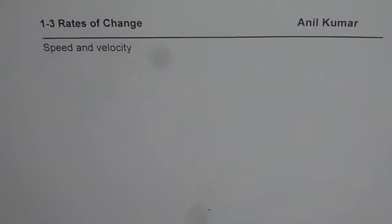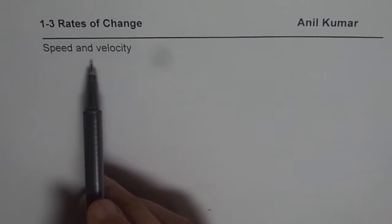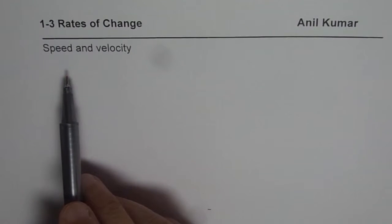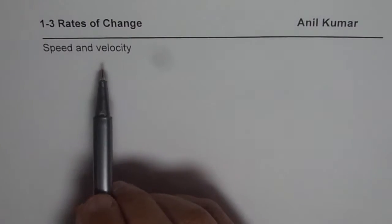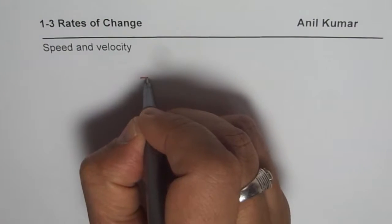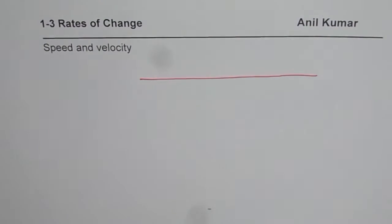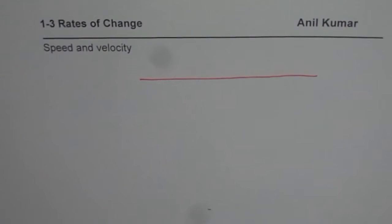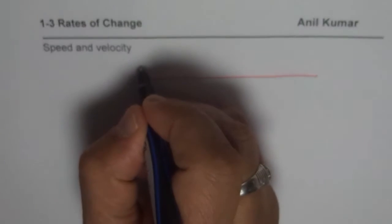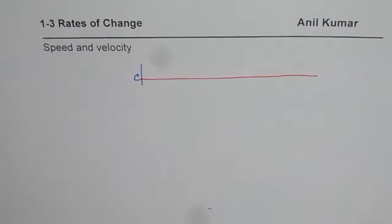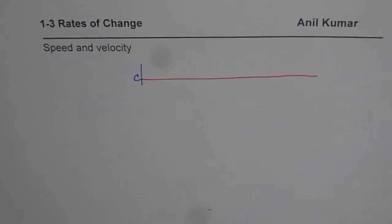I'm Anil Kumar and in this video we'll try to explore what is speed and what is velocity. We are working on rates of change and whenever we are on this topic, speed and velocity is always of prime concern. To take a very simple example, I will imagine there is an object traveling along a straight path, and there is a camera mounted at a point from which we are trying to monitor the situation. We'll consider speed and velocity and see how they are similar and how they are different.